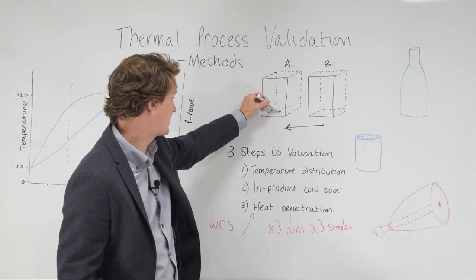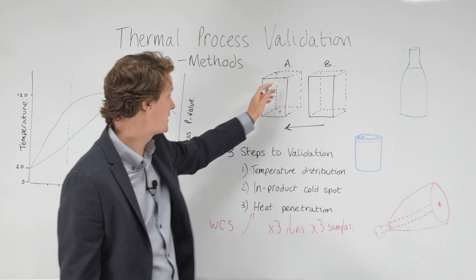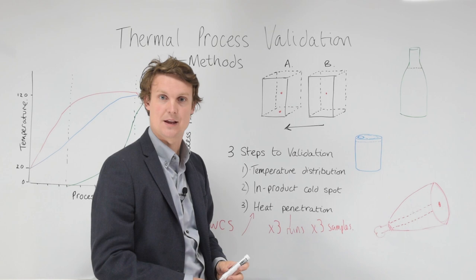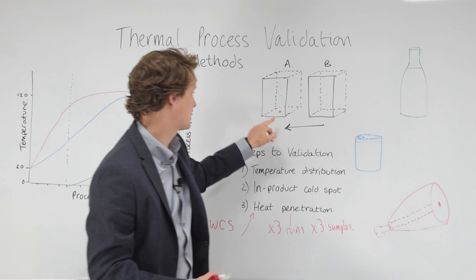We might find that crate A is colder than crate B. Or sometimes, if it's a rotary system, we might find that it's in the middle. But we need to do some testing, temperature distribution testing, to understand that. Because whichever position we choose, let's say it's crate A at the bottom, that's the position we're going to put our actual final validation samples in part three.